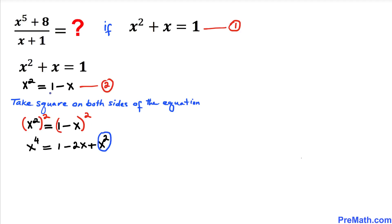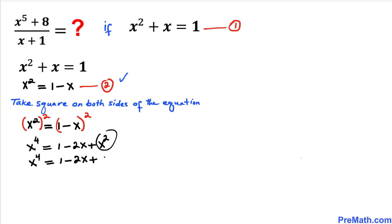Now I'm going to replace the x squared term with 1 minus x from equation two. So the equation becomes x to the power 4 equals 1 minus 2x plus (1 minus x). Combining like terms on the right hand side gives us x to the power 4 equals 2 minus 3x. We'll call this equation number three.